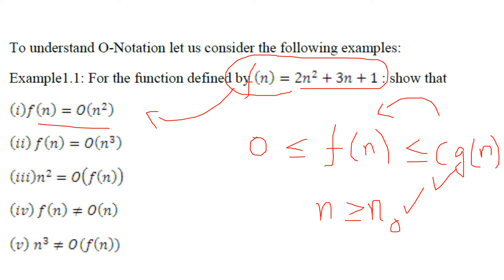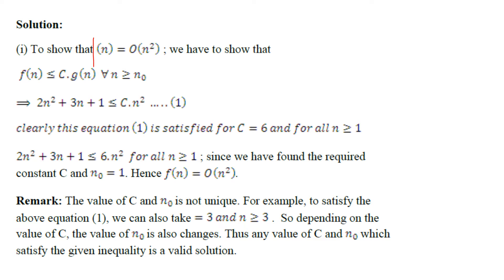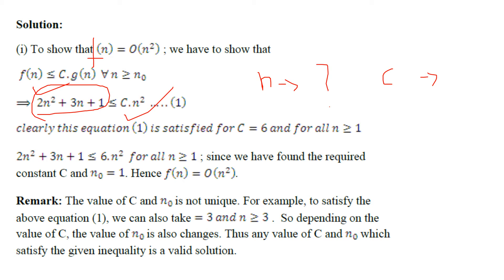I will show the first case; for the remaining cases you can try them out or refer to the manual. Looking into this problem, to show that f(n) is O(n²), we have to show that f(n) is greater than 0 and less than or equal to c times g(n) for all n greater than n₀. Specifically, we must show that 2n² + 3n + 1 ≤ c·n². When can this inequality hold? We start substituting values.